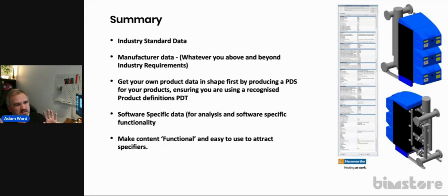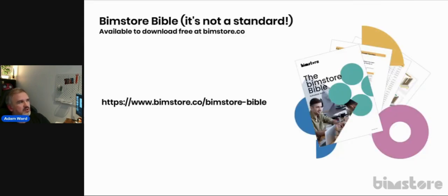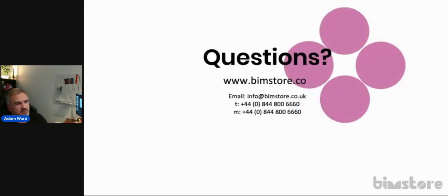All the cleverness should happen behind the scenes using formulas and rules. The options given to the architect should be simple: what's the size, what's the colour, how many opening panels do you want — and let the content do the rest. If you want more information on building good BIM content or the standards we've discussed today, download the BIM Store Bible. It'll answer most of your questions, and if you have others, reach out to us.